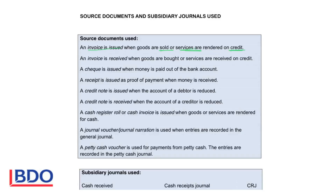An invoice received — you receive the invoice from the place where you buy the goods. So invoice received will be for goods purchased on credit or services received from someone else on credit.